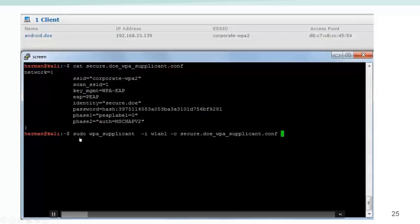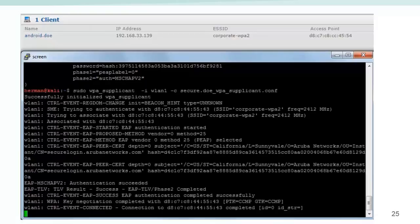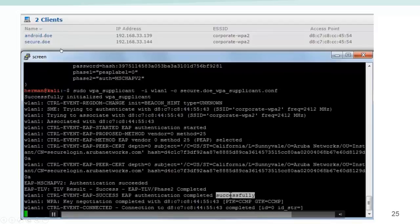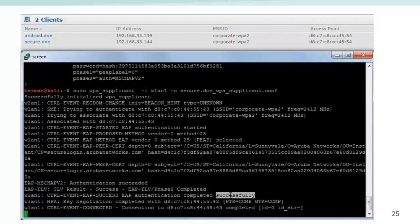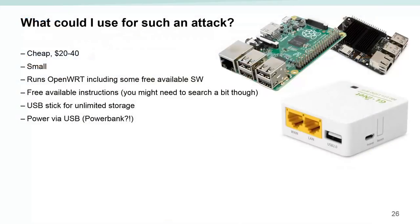Let's see what happens if we issue this command. The supplicant is initializing, it's connecting, and you can see it's now successfully connected. Here on top on my access point I can see that our user, 'secure though', is now connected to the network. That's pretty bad. What's even worse is that you can perform these attacks with very limited budget — you can run it on Raspberry Pis or boxes with OpenWRT. You just put in the attacking RADIUS server and you can even run it on a USB power bank, so it's very portable.